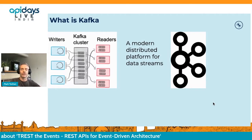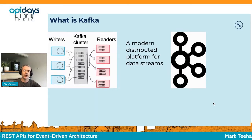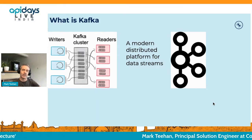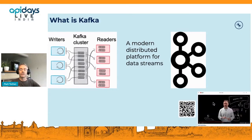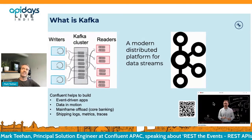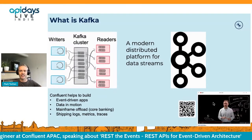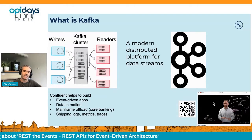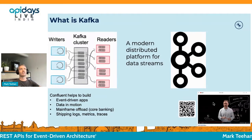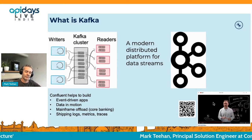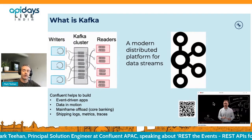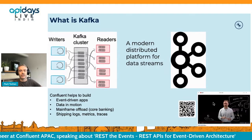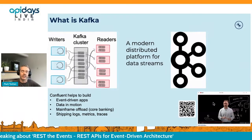Kafka is a modern distributed platform for data streams. Like any data processing platform, it has writers and readers — these are producers and consumers in Kafka parlance — and they talk to a cluster of Kafka brokers. There's a really good YouTube video from my colleague Tim Berglund going into some of the origins and uses of Apache Kafka, which I would really recommend. Kafka started out as a replacement for the family of MQ-type products, but that was 12 years ago, and it's really come a long way since then.